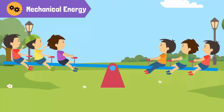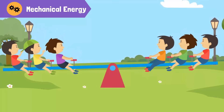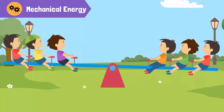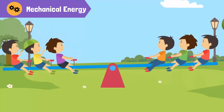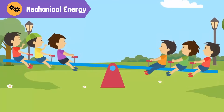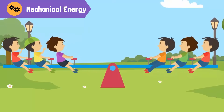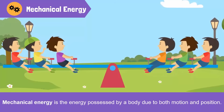The kids are playing on the swings. How does the swing move? The swing moves using mechanical energy. Mechanical energy is the energy possessed by a body due to both motion and position.